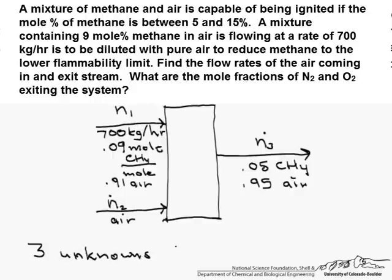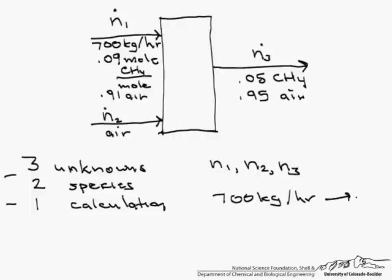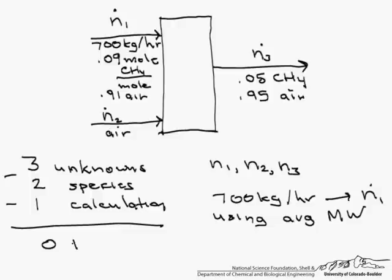Those three unknowns are N1, N2, and N3. We can do two independent species balances, or one species balance and one overall balance. In addition we have a calculation that we can use, and this calculation is from 700 kilograms per hour to a molar flow rate using an average molecular weight.